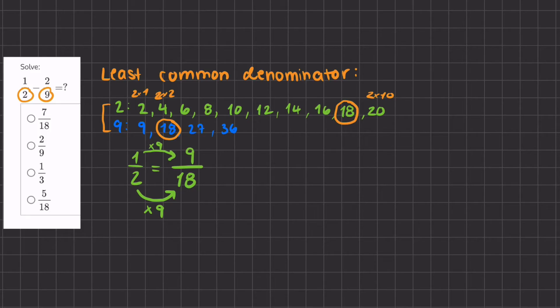Now we'll do the same thing for 2 over 9. If we know that the common denominator has to be 18, to get from 9 to 18, I multiply it by 2. And so the same for the numerator, I'll have to multiply it by 2, giving me 4 over 18.